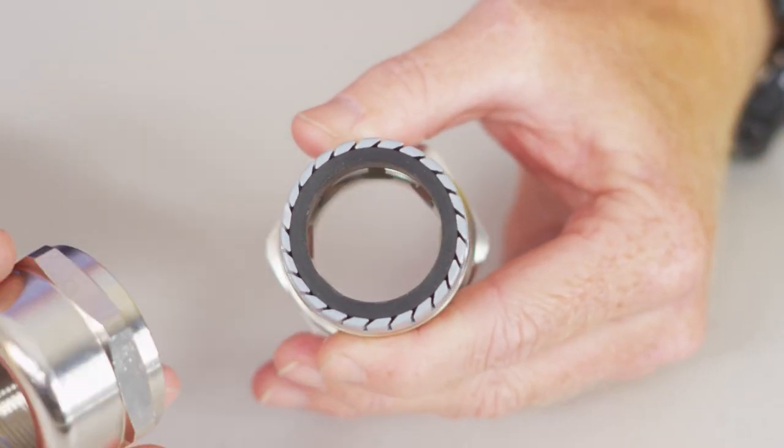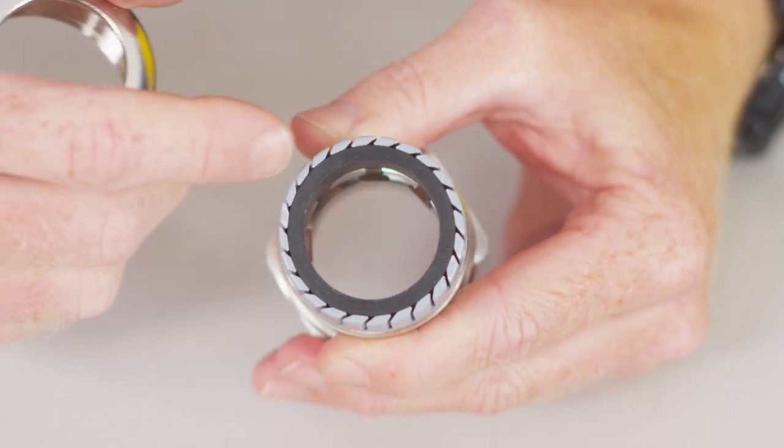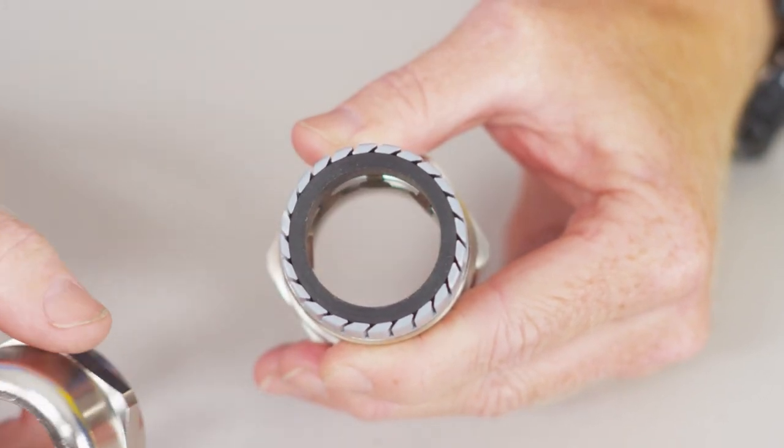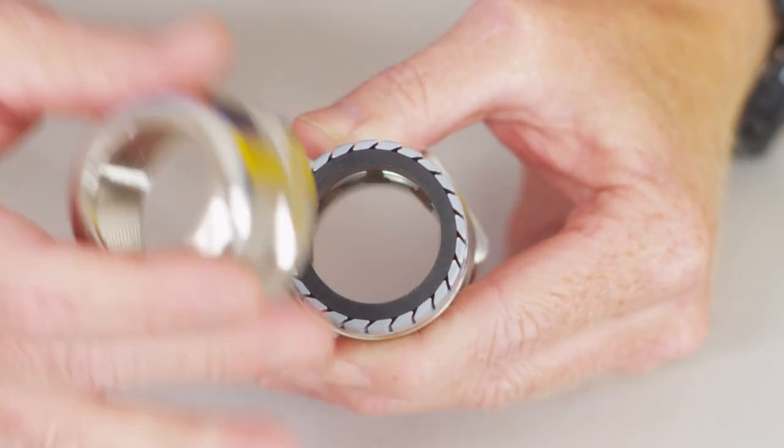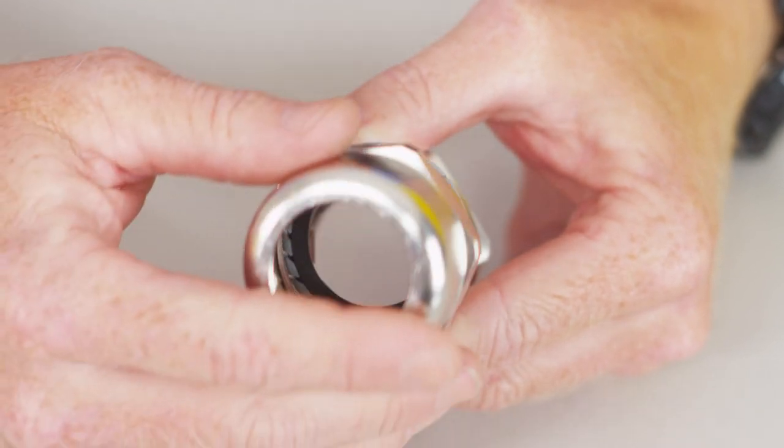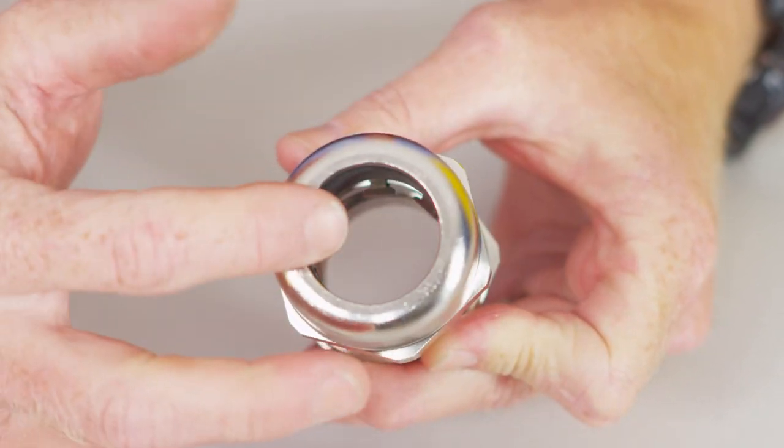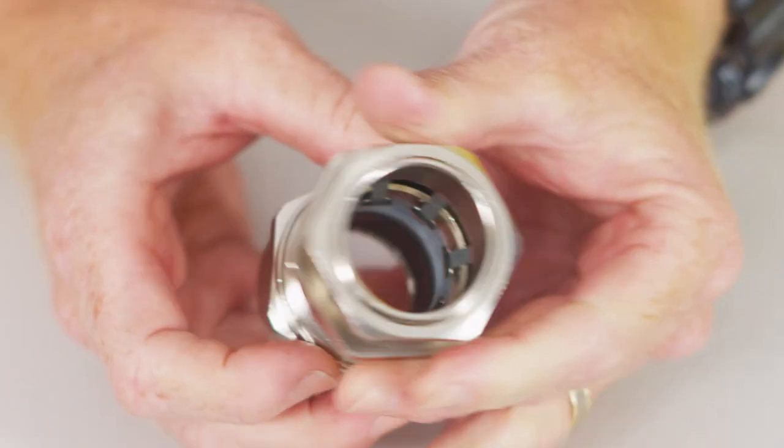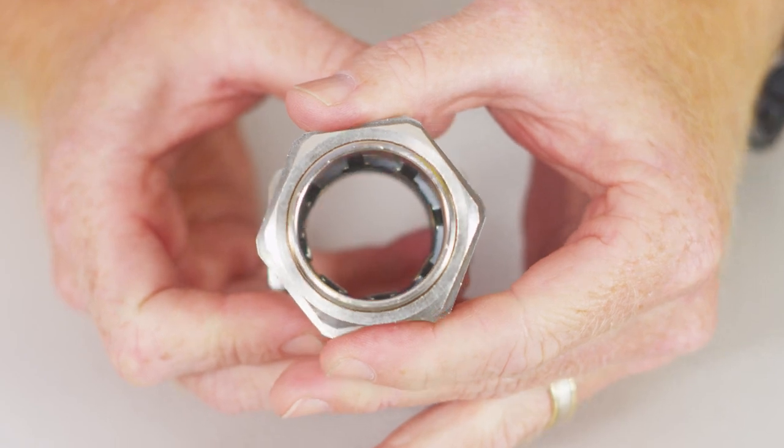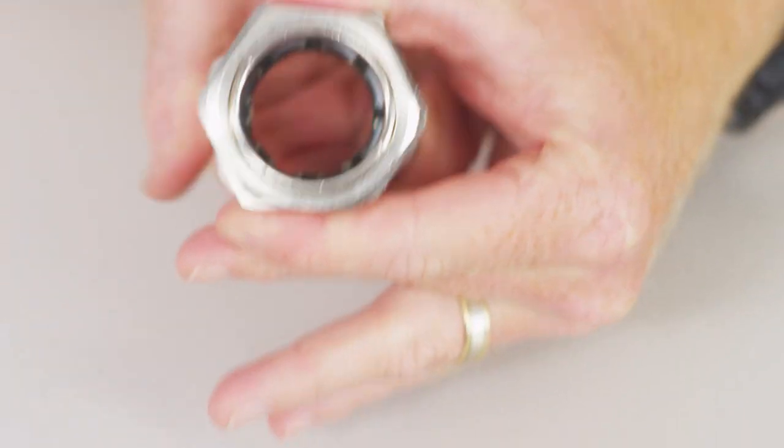Just like any other IP rated gland we have, we've got the back neoprene seal that tightens down onto the back of the cable giving an IP rating. This one here, IP68. And as we tighten up the back nut we actually compress onto that seal and which also at the same time in this EMC style gland tightens the knuckles down.